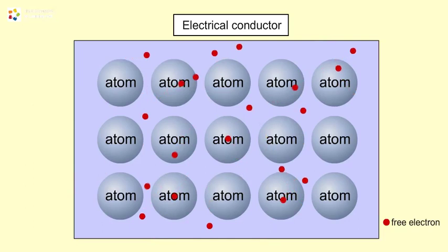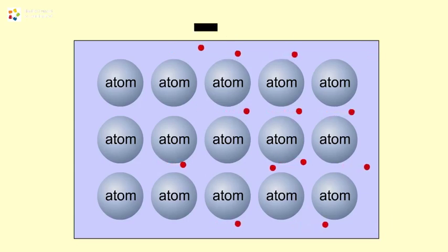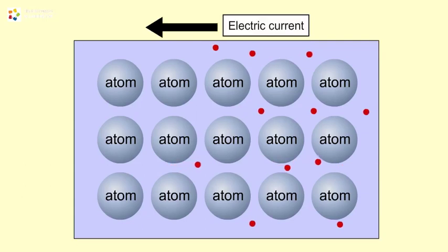These free electrons move randomly in all directions. When a source of electric charges, like a dry cell, is connected to a conductor and the circuit is complete, all these free electrons, also known as electric charges, are driven to flow in only one direction. This flow of electrons in one particular direction constitutes an electric current.